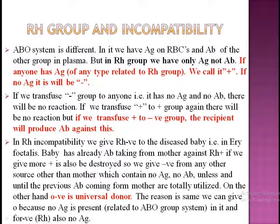Regarding the RH group, if we transfuse RH negative blood to anyone — that is, it has no antigen and no antibody — there will be no reaction, no complication. If we transfuse RH positive to the same RH positive group, again there will be no reaction, no complication. But the condition becomes complicated when we transfuse RH positive blood to an RH negative recipient. Then there is a chance of reaction between the positive and the negative groups, and this reaction may create complications and a dangerous condition.